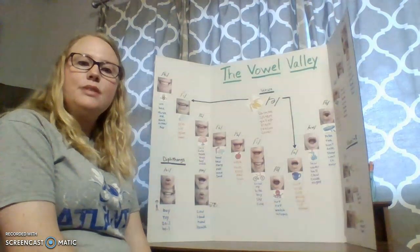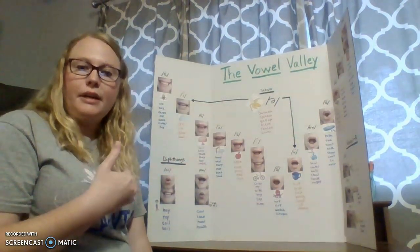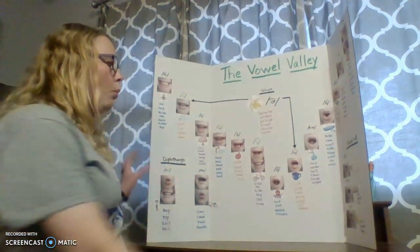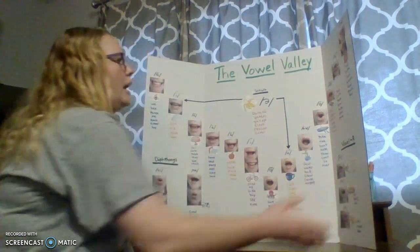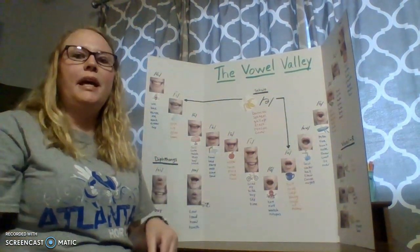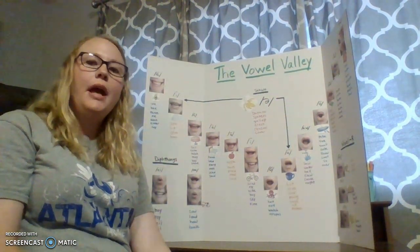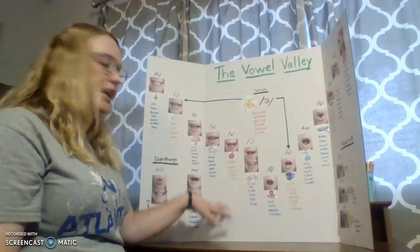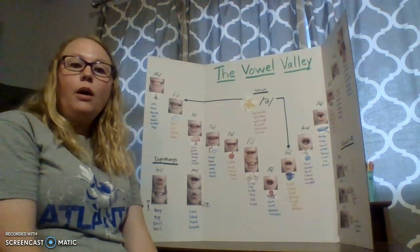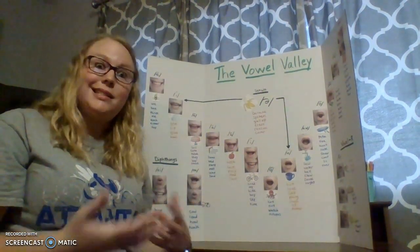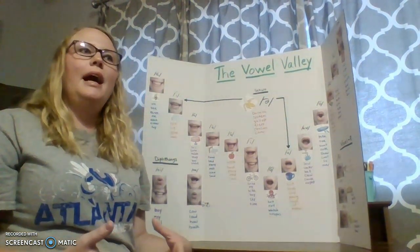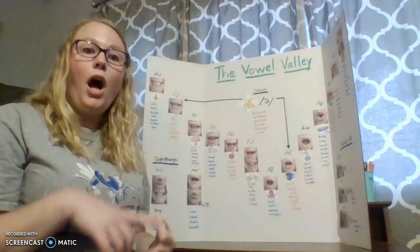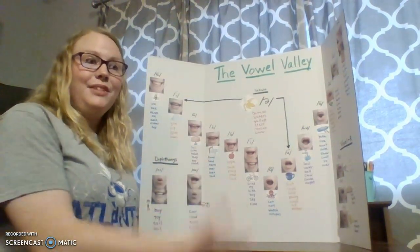Having this board in the classroom for students to visualize is going to be very helpful, especially for students struggling to produce the correct sounds. I've also left space to add words as we go through our sixth grade curriculum — words that don't follow rules can go in the schwa area, or we can add them to other vowel sounds. This gives kids a sense of ownership: they've not only looked at it and tried it, but actively put input into the board.